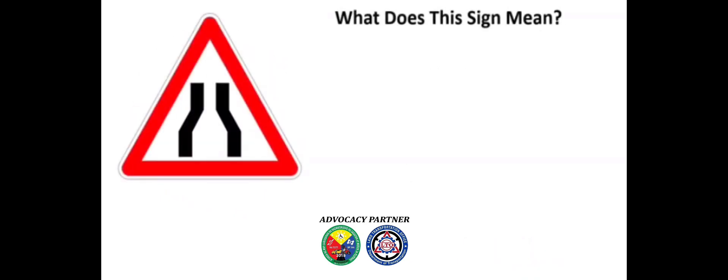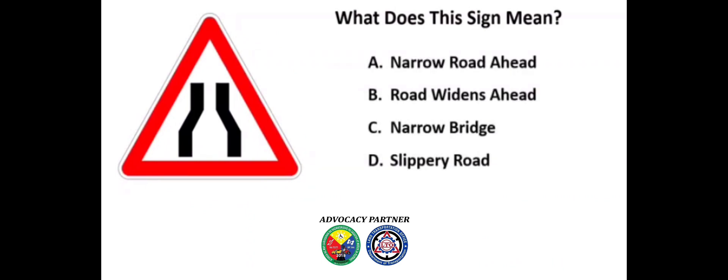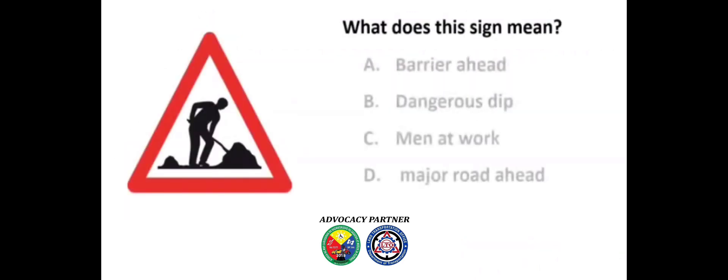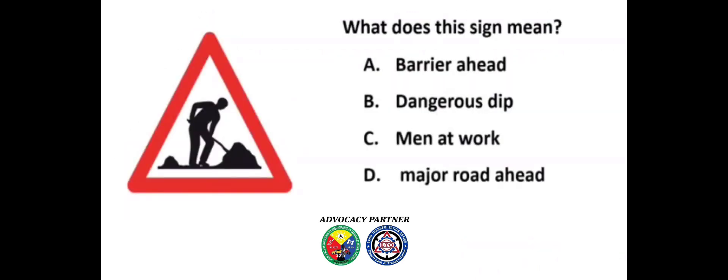What does this sign mean? A) Narrow road ahead, B) Road widens ahead, C) Narrow bridge, D) Slippery road. Answer: A) Narrow road ahead. What does this sign mean? A) Barrier ahead, B) Dangerous dip, C) Men at work, D) Major road ahead.